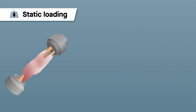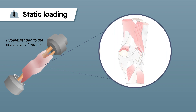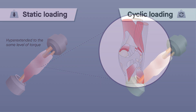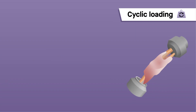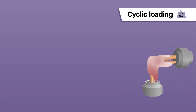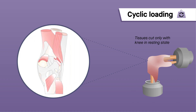In the static loading method, knees were hyperextended to the same level of torque. Selected soft tissue structures were then cut from the knees in sequence, with the resulting loss in restraining moment representing the function of each structure in resisting hyperextension. In the cyclic loading method, the setup was the same, except that tissues were cut only after bringing the knee to its resting state. This allowed researchers to capture any possible stress relaxation that tissues in the knee may undergo.